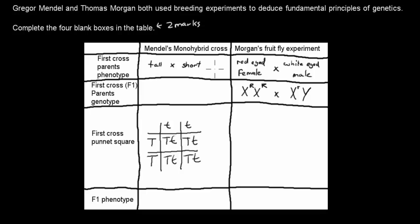This says tall, short, red-eyed female, white-eyed male, XʳXʳ, XᴿXᴿ times XʳY. You've got a Punnett square with capital T capital T and small t small t and then the crosses. Okay, that's it.